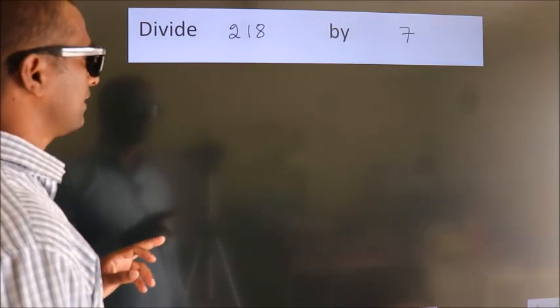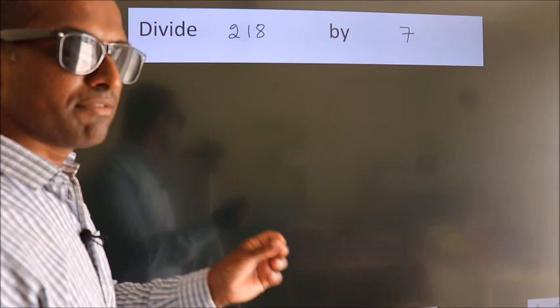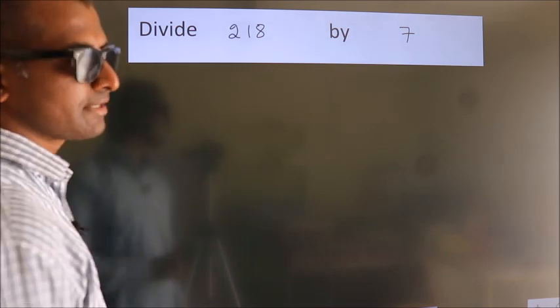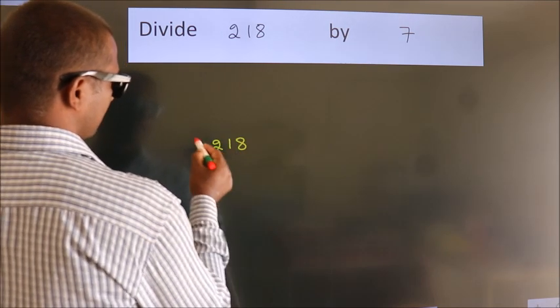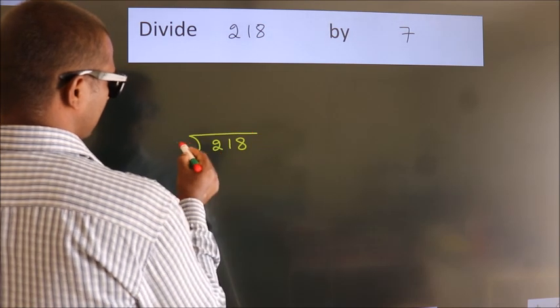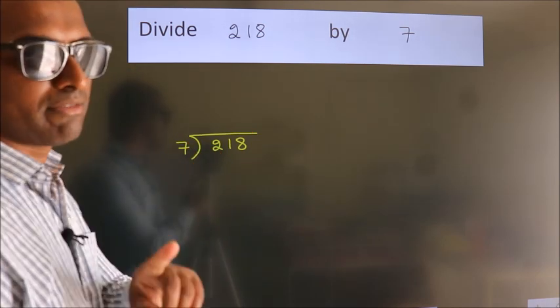Divide 218 by 7. To do this division, we should frame it in this way: 218 here, 7 here. This is your step 1.